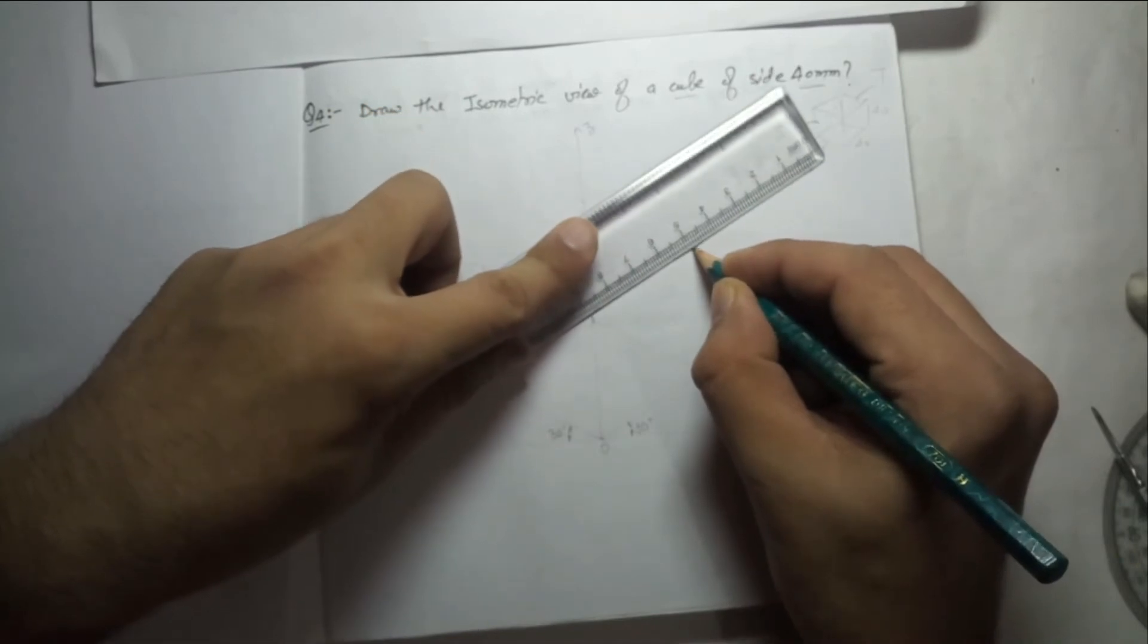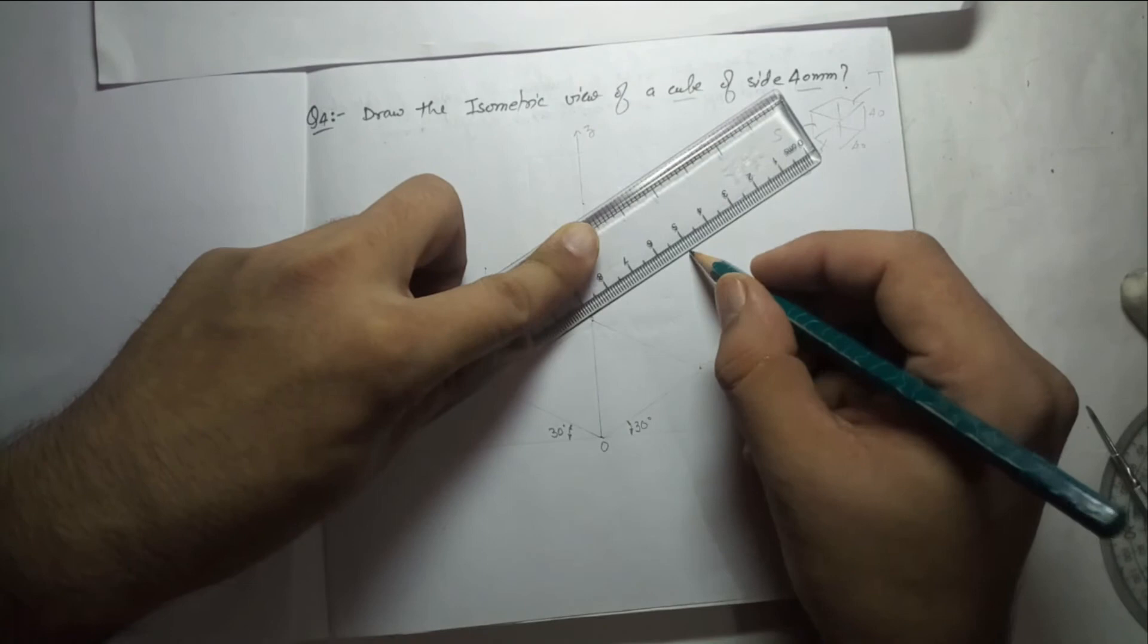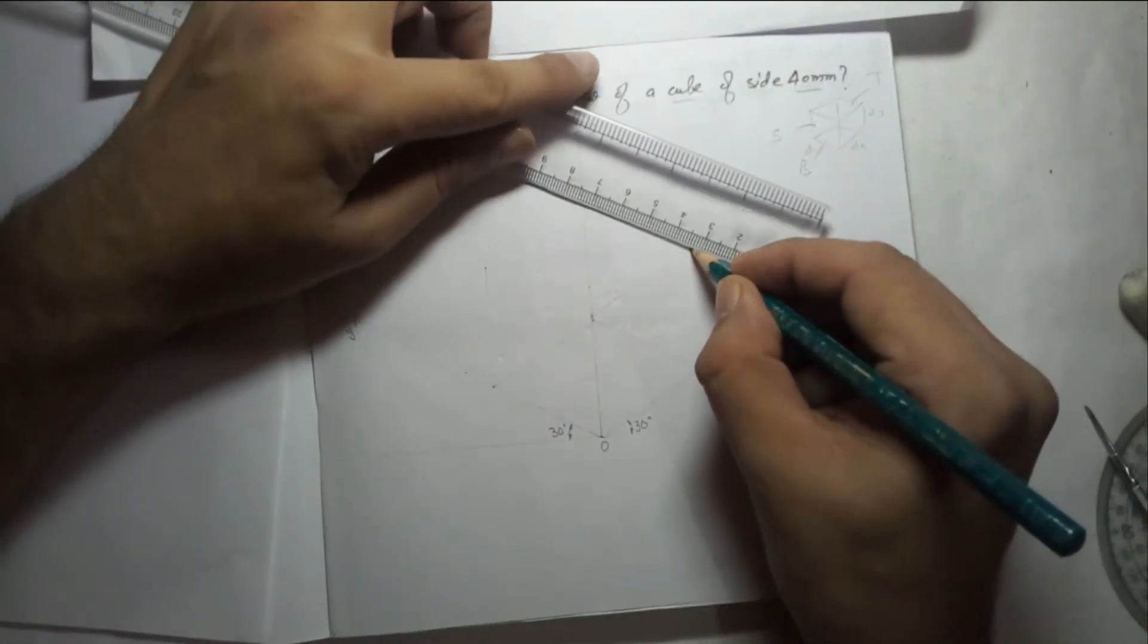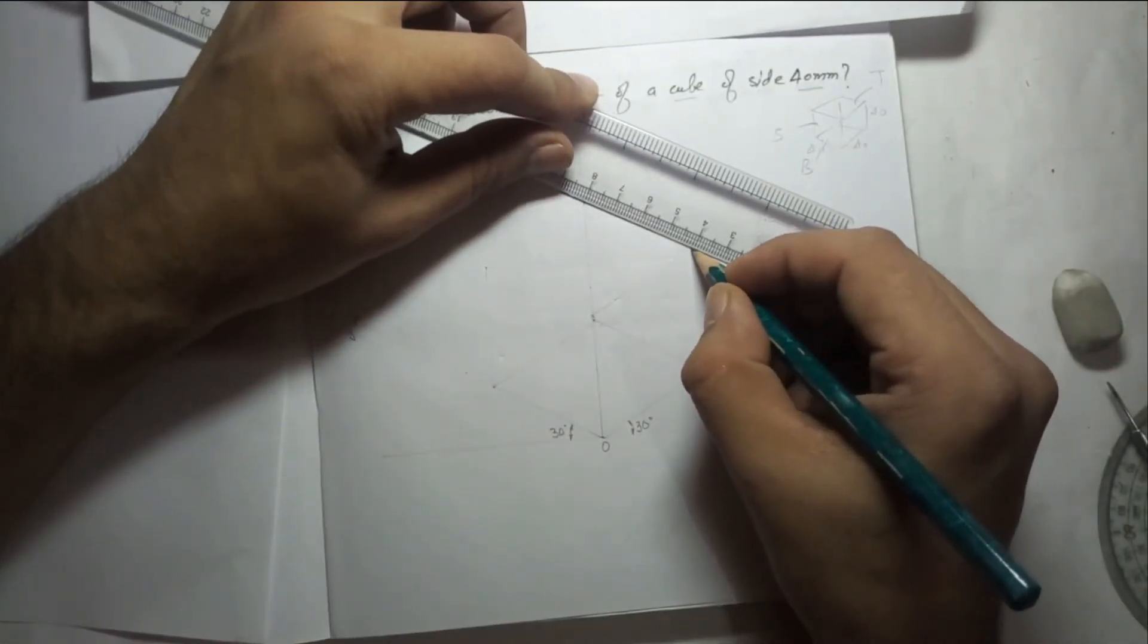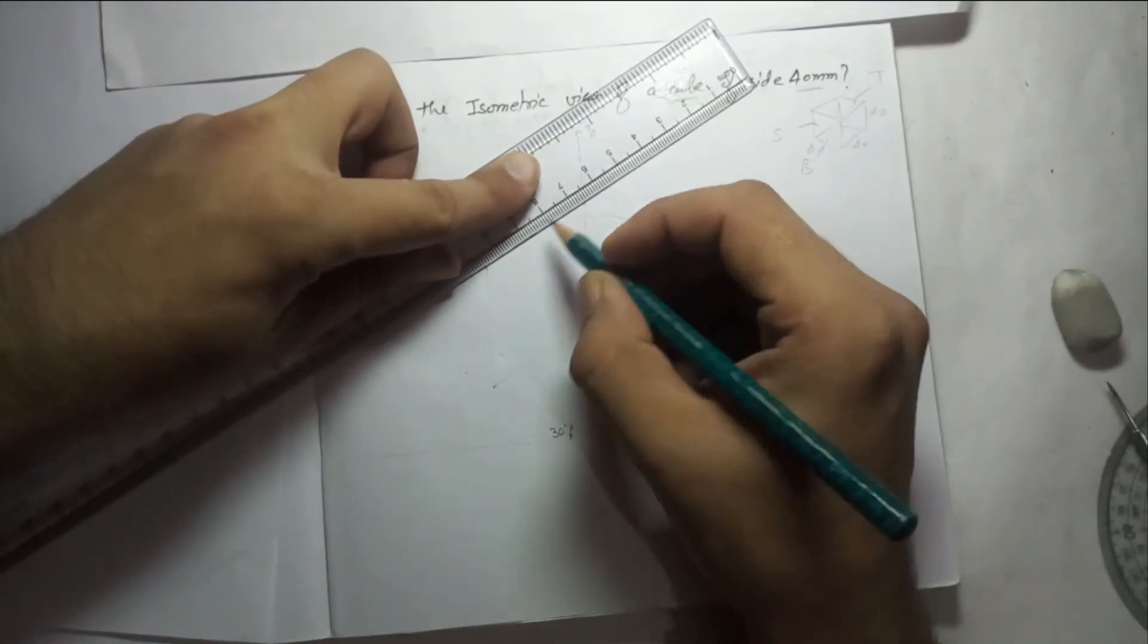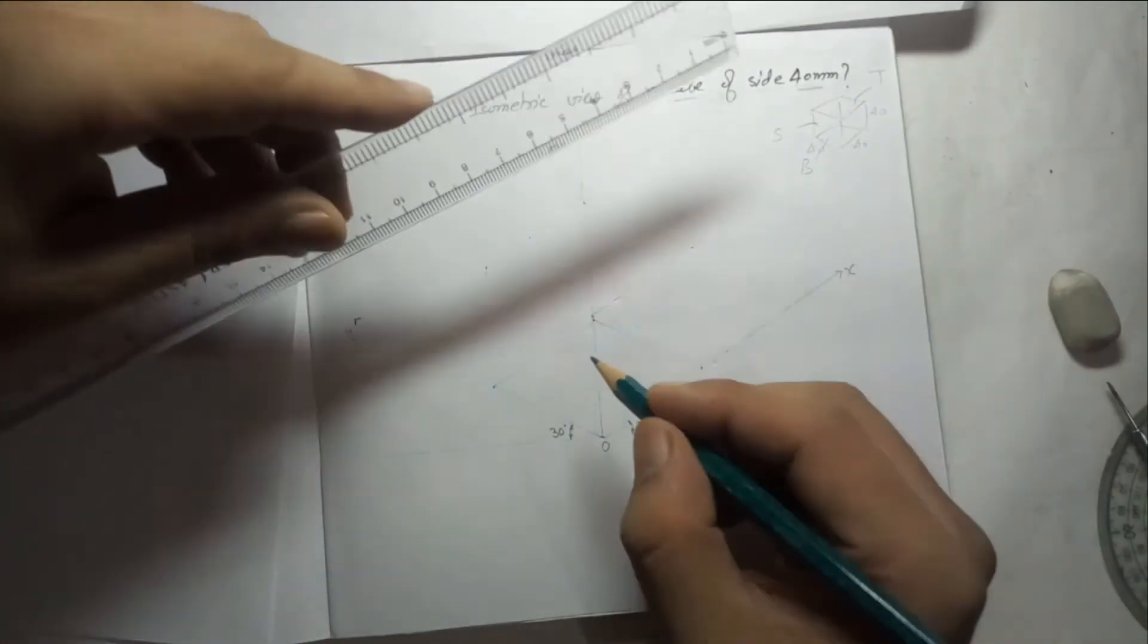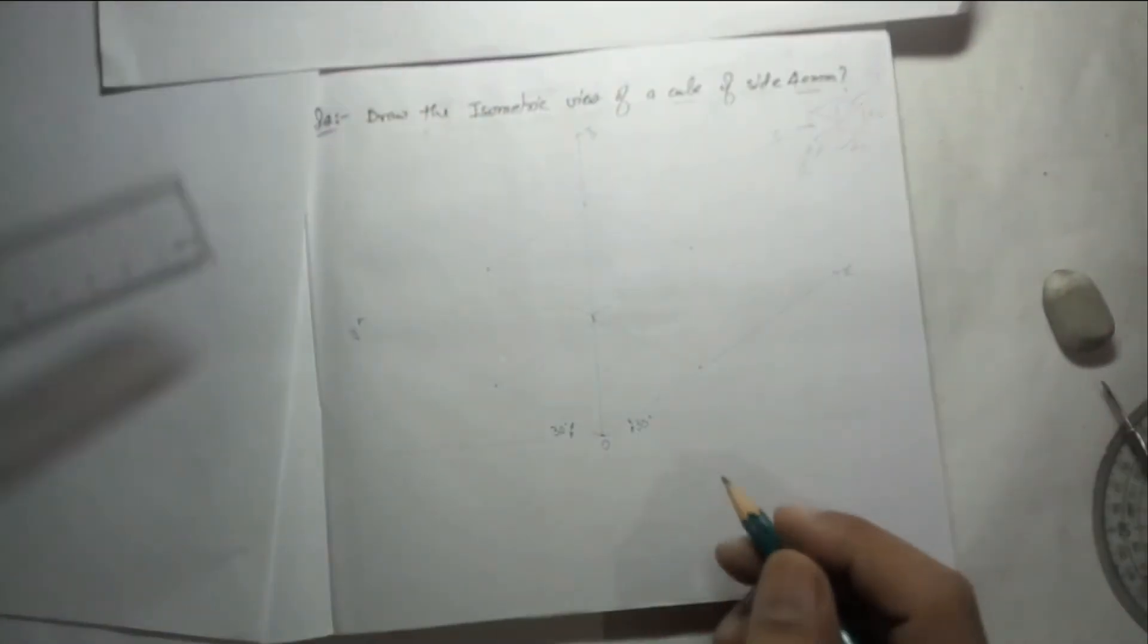You mark this point, and from this corner also exactly 40. So we get four points in vertical direction. Now we will join these top points. Again I'm telling you, always draw the light diagram first. Later on we will decide which part should be dark, which part should be light.